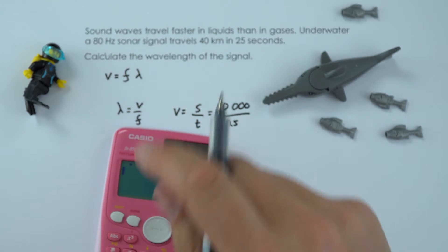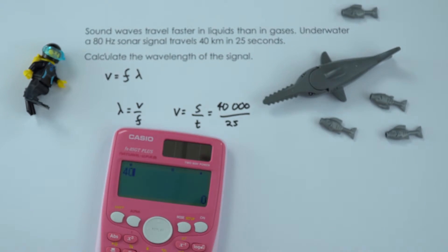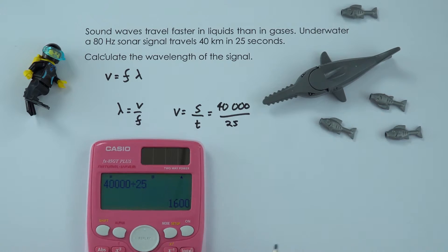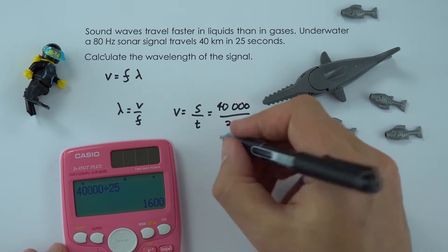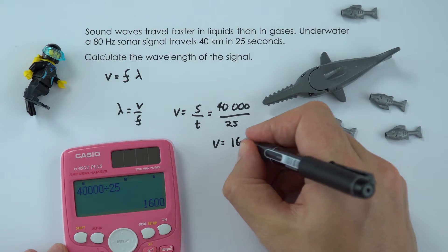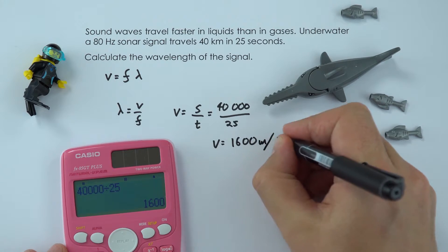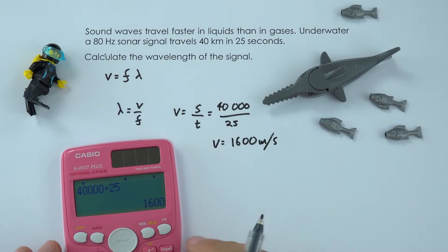Just using my calculator — I could probably do this in my head, but it's quicker with a calculator. That gives us a wave speed equal to 1600 metres per second.